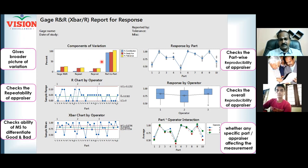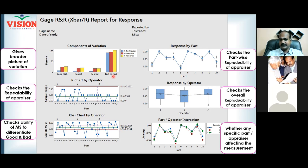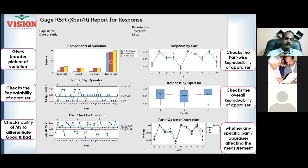The first graph has three colors. The third bar is called part-to-part variation, which is the result of process variation. The first bar is measurement variation — Gauge R&R. If part-to-part is taller than the measurement variation, your problems are less compared to your friend's problem and you can advise him. But when Gauge R&R is more than part-to-part, you can straight away understand you have an inadequate and incapable measurement system — your project cannot succeed.